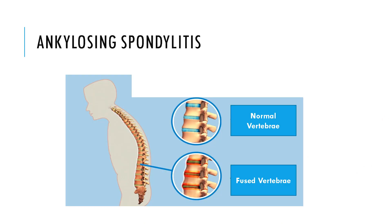In the case of ankylosing spondylitis, you can see in the image a normal vertebrae alongside fused vertebrae. This occurs due to long-standing and increasing lower back pain, spinal stiffness, inflamed joints, tendons, and fatigue, resulting in reduced mobility. In some cases, the person may be hunched over or have a hunched back. This condition affects the joints of the vertebrae.